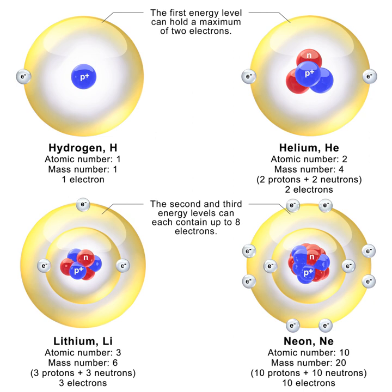The electron is able to revolve in certain stable orbits around the nucleus without radiating any energy, contrary to what classical electromagnetism suggests. These stable orbits are called stationary orbits and are attained at certain discrete distances from the nucleus. The electron cannot have any other orbit in between the discrete ones. The stationary orbits are attained at distances for which the angular momentum of the revolving electron is an integral multiple of the reduced Planck's constant.